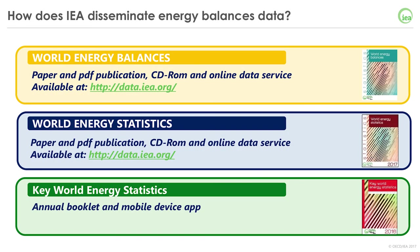Regarding data dissemination, the IEA publishes the annual World Energy Balances and World Energy Statistics. These two major publications and databases are available in paper, PDF, and as an online data service comprising several datasets, published every year around mid-July. The Key World Energy Statistics is also published annually as a paper booklet and an app for mobile devices, containing a summary of the most important data from the IEA Energy Data Center.